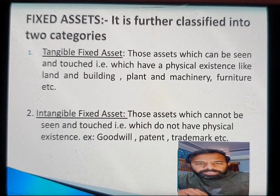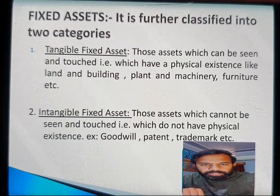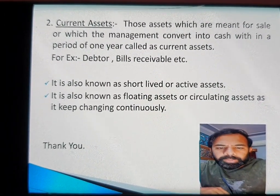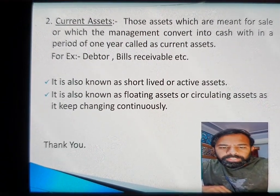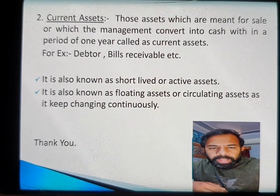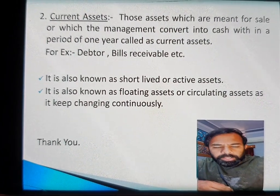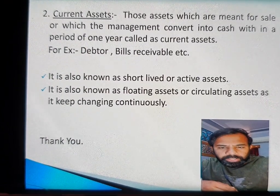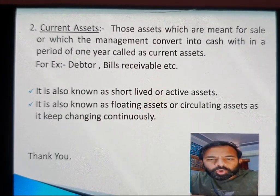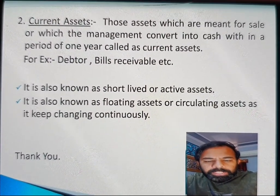Asset is divided into two parts: non-current asset — whose examples are fixed assets, further divided into tangible and intangible — and the second type is current asset. Current assets are those assets which are meant for sale, or which management can convert into cash within a period of one year. Current assets are also called short-lived, active, circulating, or floating assets. Examples include debtors, bills receivable, stock, cash, and bank balance.